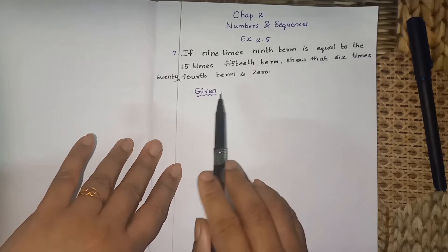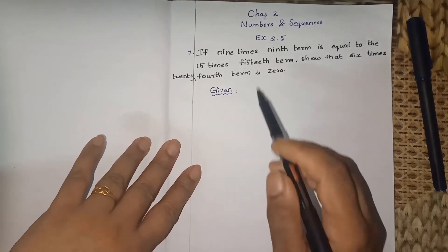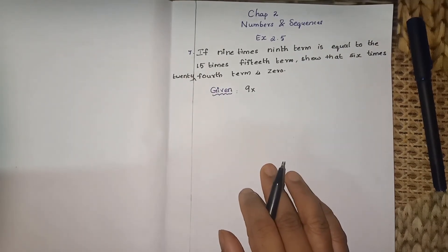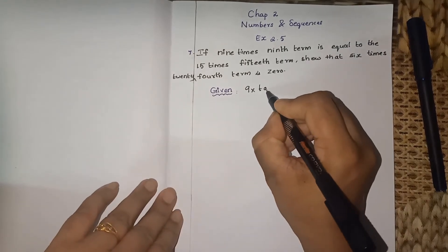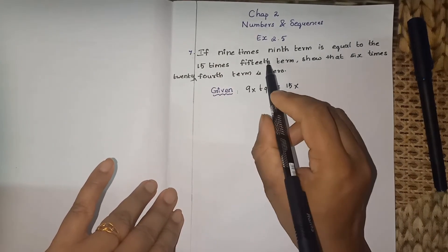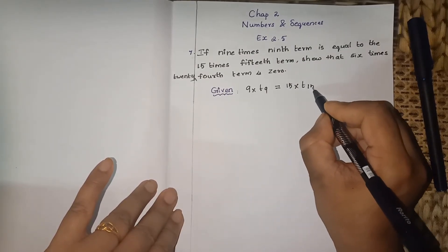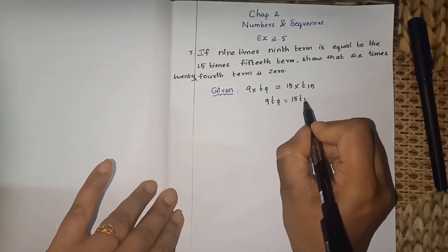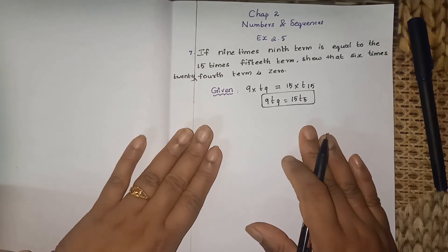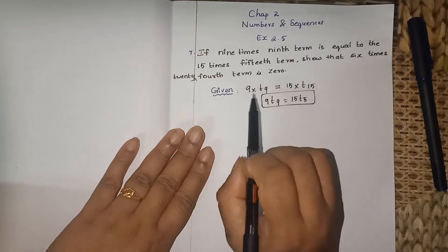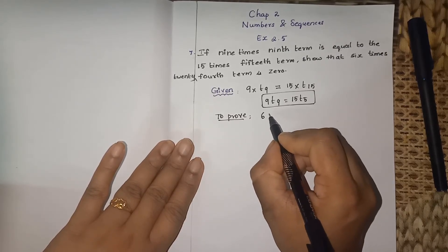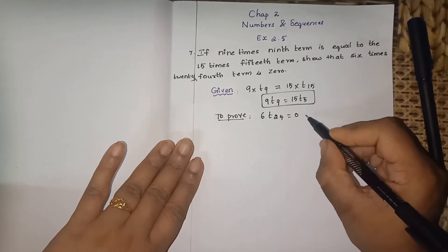First, write the given part. Given: 9 times the 9th term, so 9 into t9 is equal to 15 times the 15th term, so 15 into t15. This is given in the question. Using this data, we are going to show that 6 times the 24th term is 0, meaning 6 into t24 equals 0. This is what we have to prove.